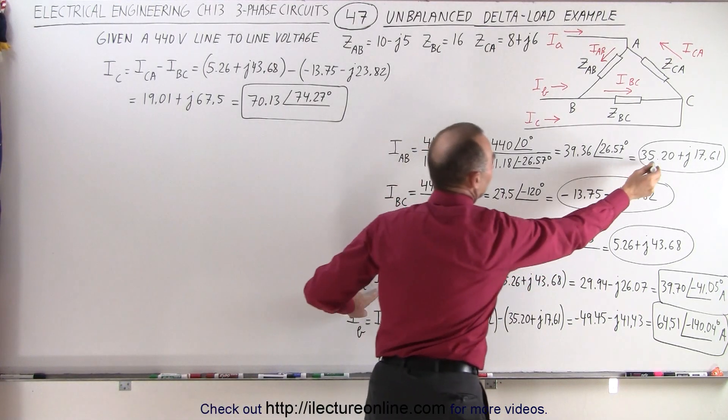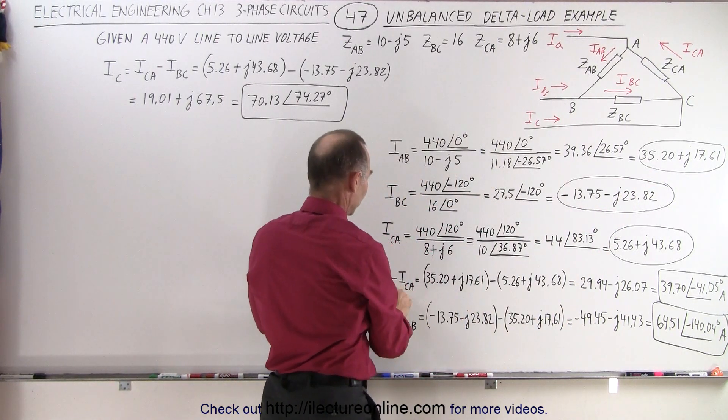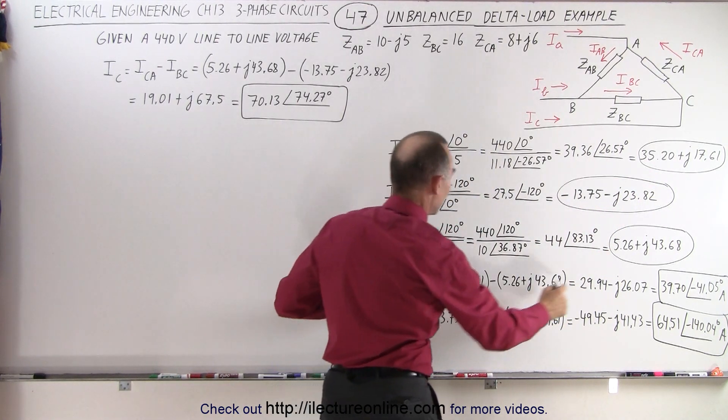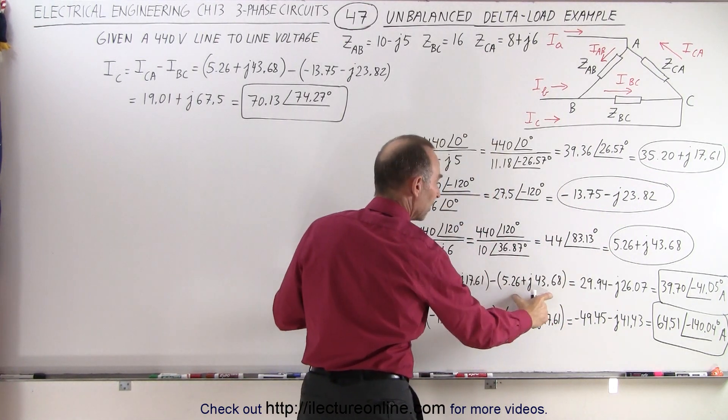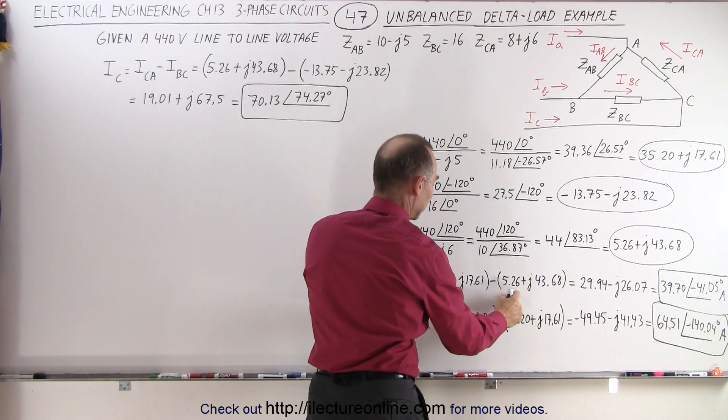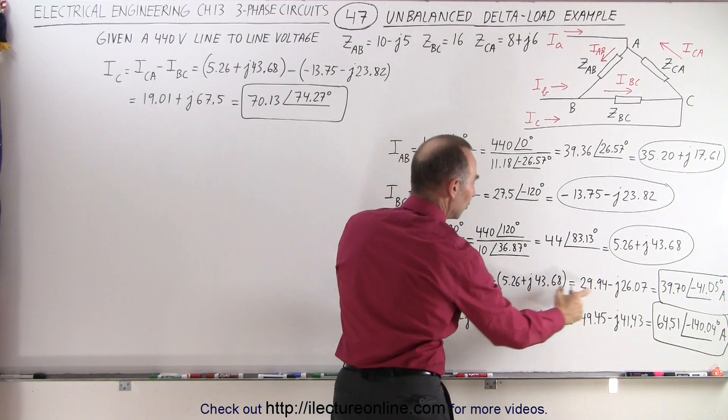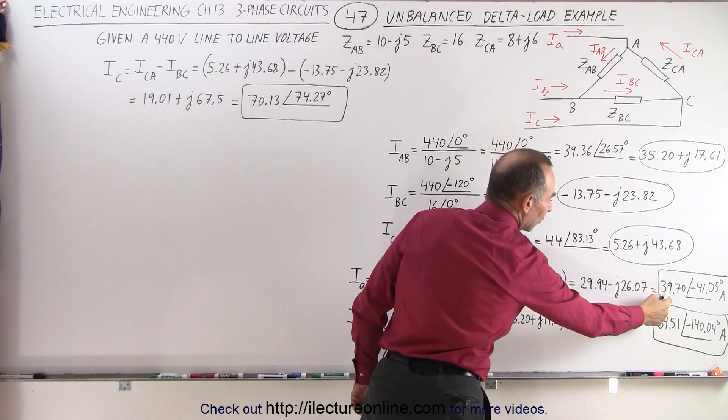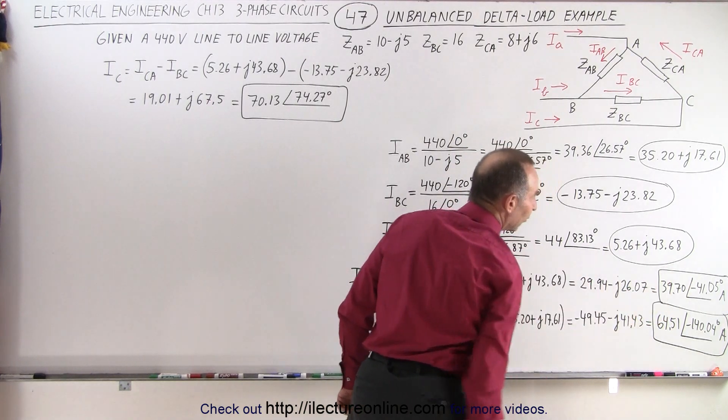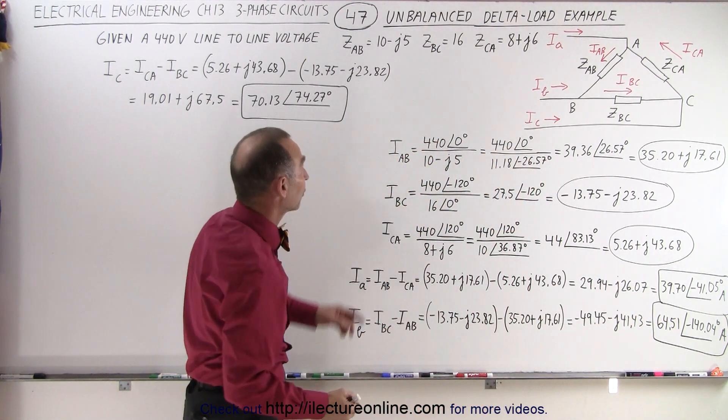So since Iab is the current right there, and we subtract from that the current Ica, which is the current here, then when we subtract these two, we get this current, and we convert that to the magnitude and phase angle format, and that would be the line current Ia.